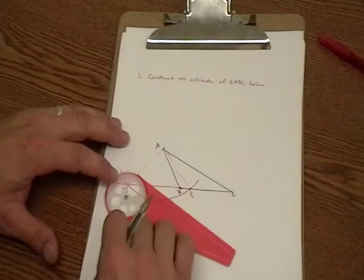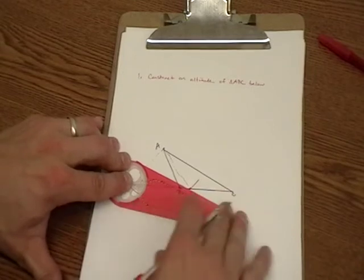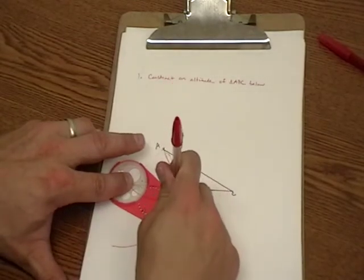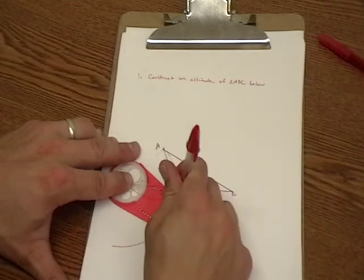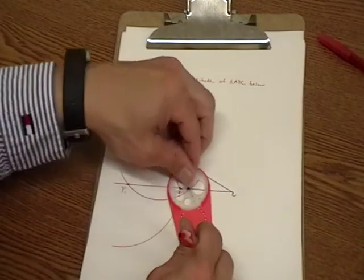I'm going to put my compass tool on point 1. I'm going to choose a radius that's reasonably large so that when I use the same radius centered at P2, those two arcs will cross.